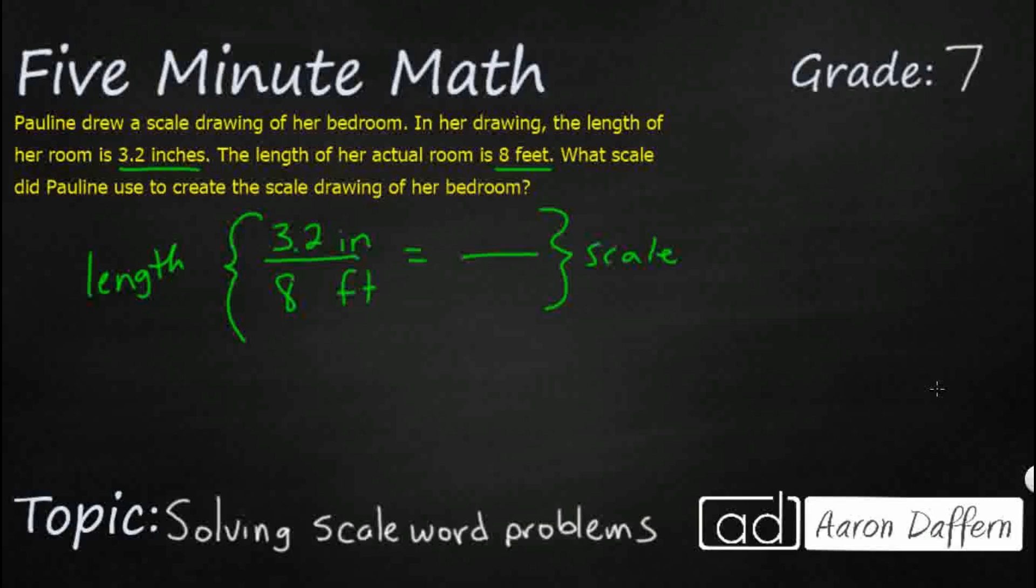Well, most scale is going to have the number one, not all. Sometimes they might say two inches equal something. But since they don't give us an extra number, let's just go ahead and make it up ourselves. One inch is going to equal blank feet. And so inches go with inches. So our one inch is going to go up on top, which means if we're going to set our scale of one inch equals how many feet, now we have our three numbers. We can use our cross multiplication.